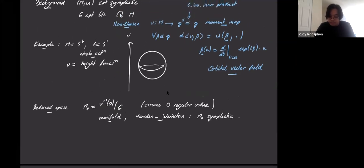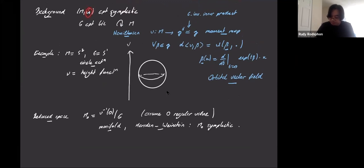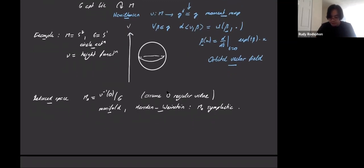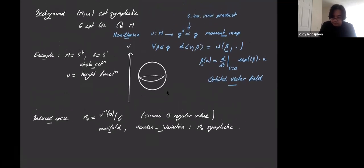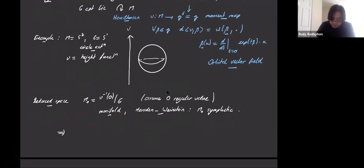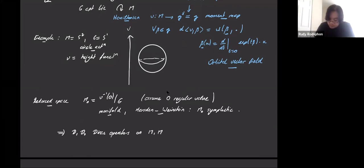So now we have two symplectic manifolds, M and M-zero. If you have symplectic manifolds, they are both spin-C, and if they are spin-C then they have a Dirac operator. So you have D and D-zero, the Dirac operators on M and M-zero. From here we can do index theory. This quantization commutes with reduction problem is about a diagram: you start from M-omega, take the equivariant index of the Dirac operator — which takes values in R(G), the representation ring of G.